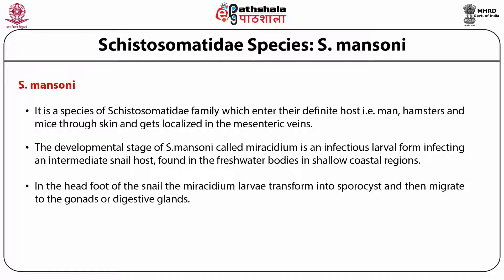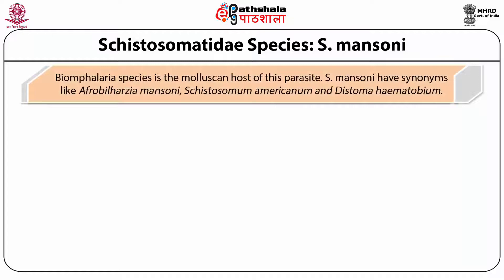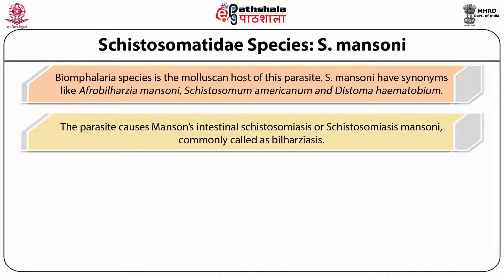In the head-foot of the snail, the miracidium larva transforms into sporocysts and then migrates to the gonads or degenerative glands. The sporocyst containing cercaria releases the parasitic form cercaria, which moves through the snail tissues and ultimately reaches into the freshwater to further invade the definitive human host. Biomphalaria species is the molluscan host of these parasites. Cystosoma mansoni has synonyms like Afrobil harzia mansoni, Cystomum americanum and Distoma haematobium.